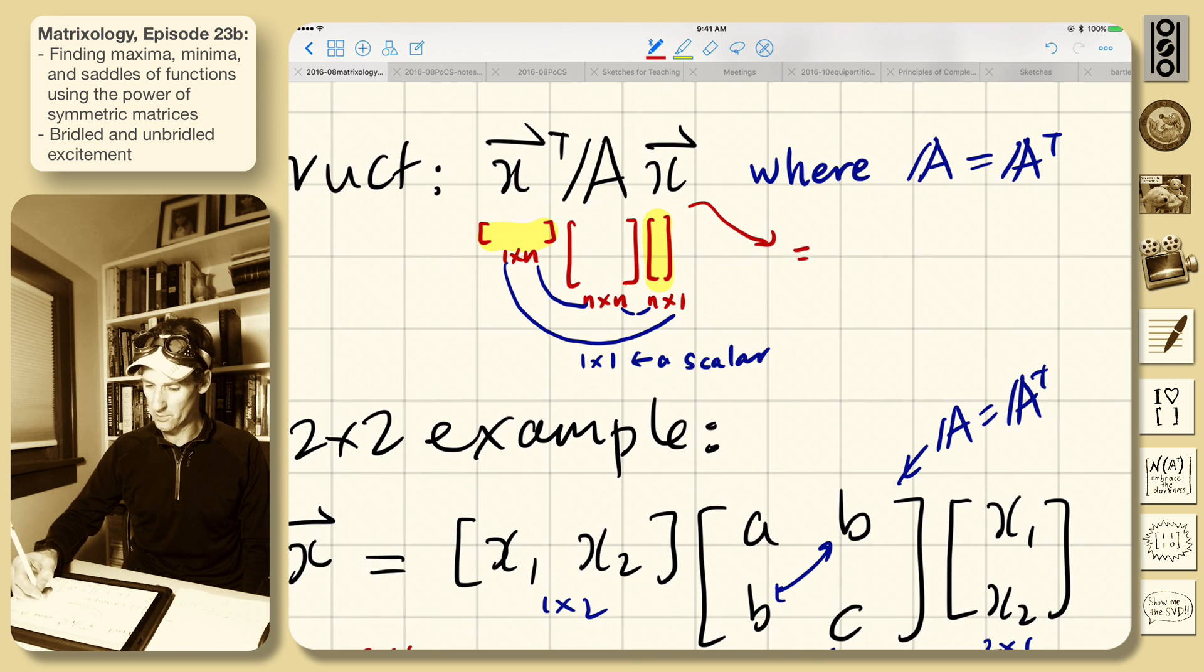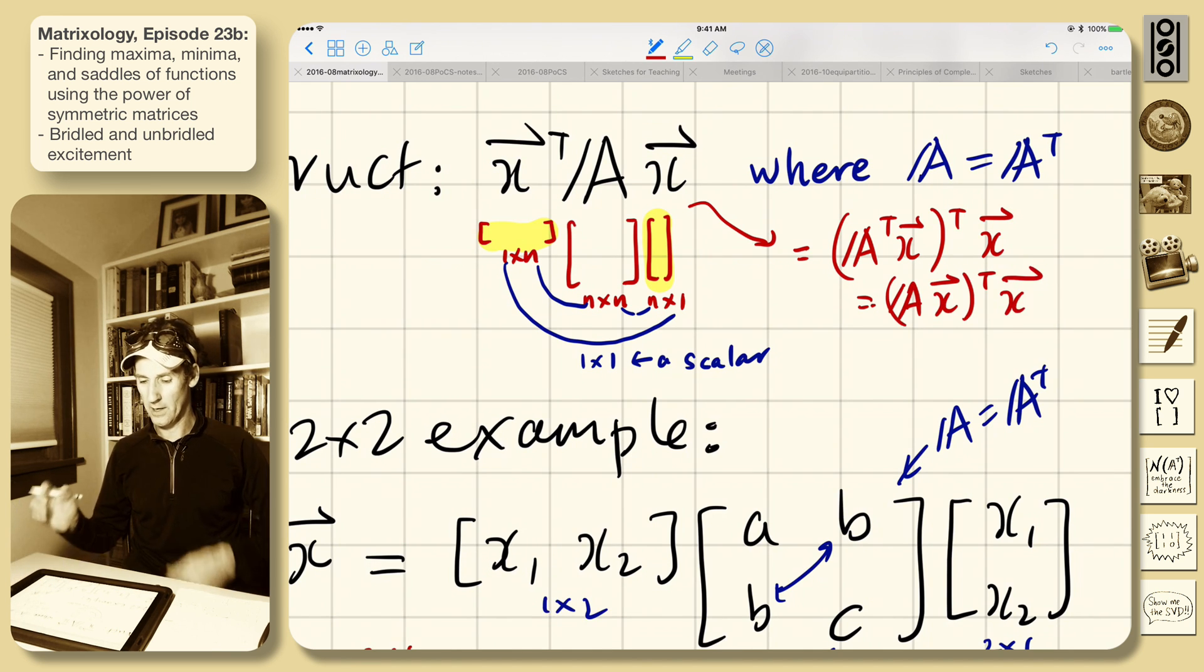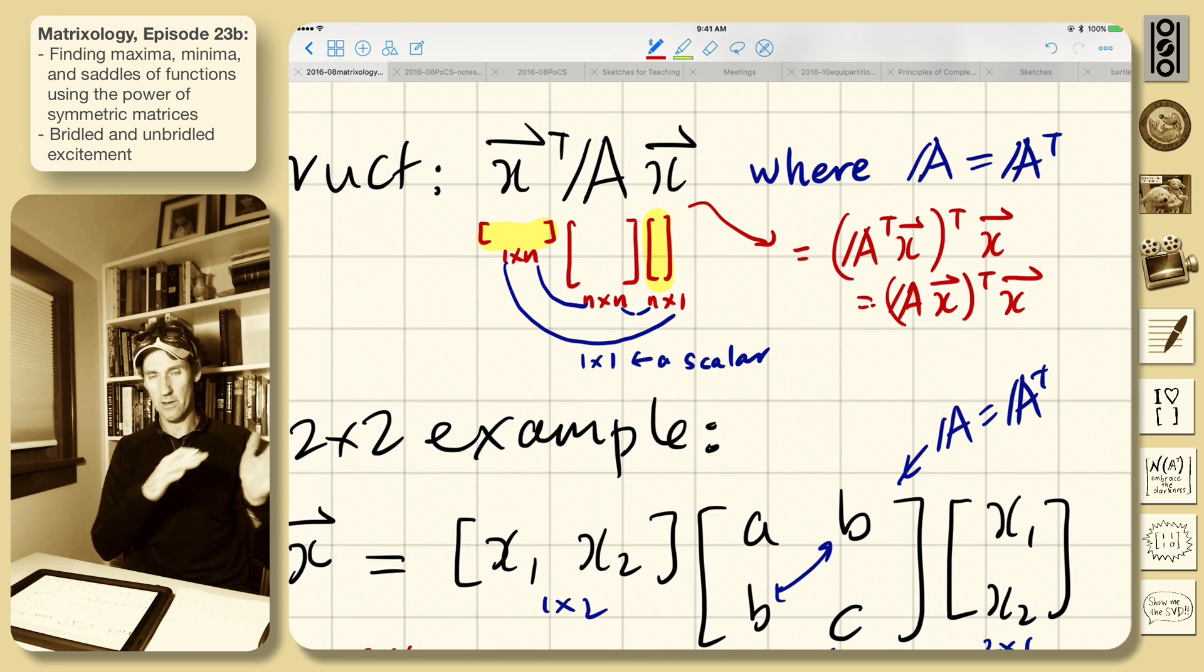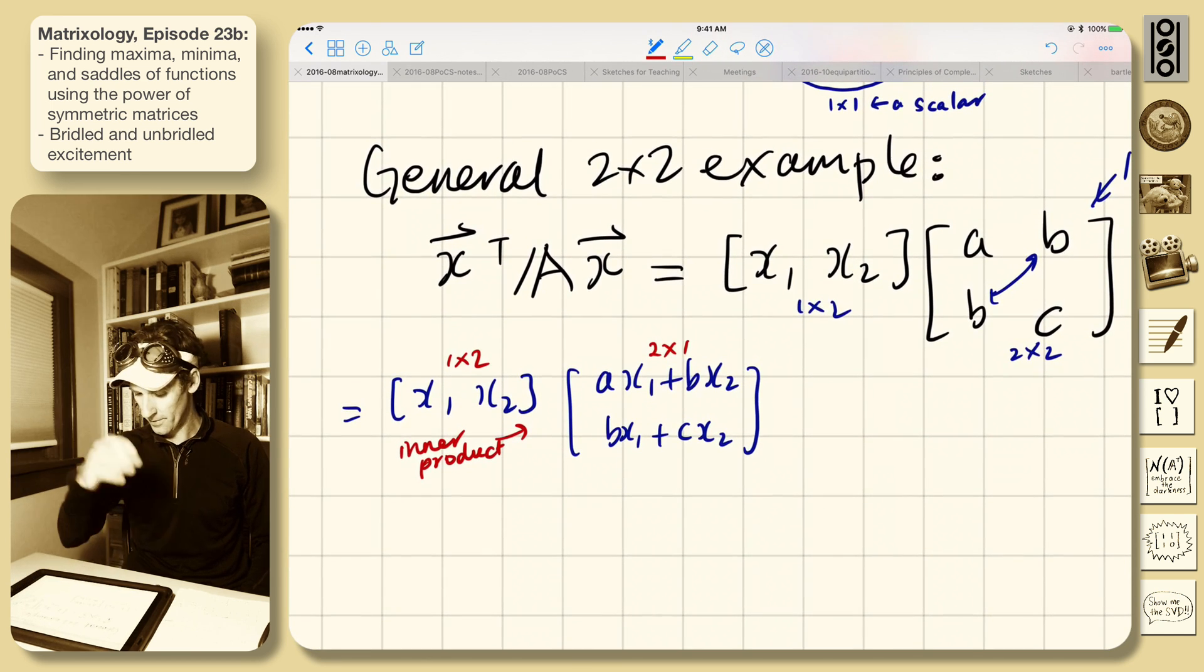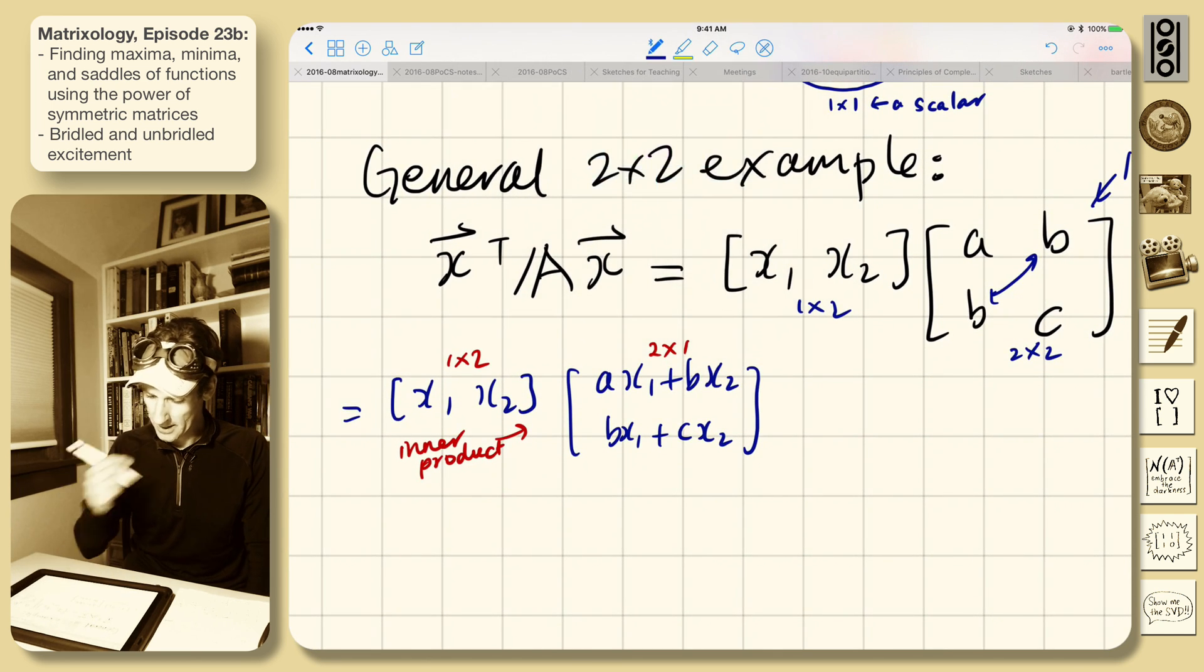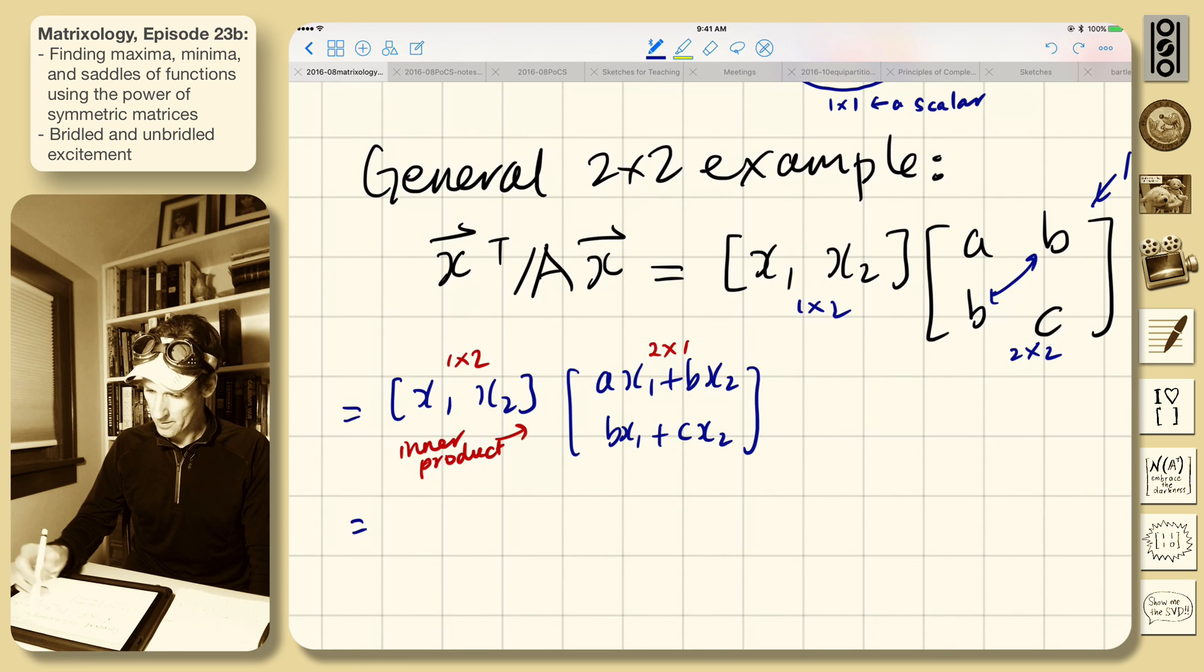Okay, so here's a 2 by 2 example. Here's A equals A transpose, symmetry here. And let's just multiply this out and see what happens. So I'll multiply the X1, X2 row vector, and then multiply the next pieces. So we'll have AX1 plus BX2, and then there's BX1 plus CX2.